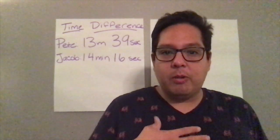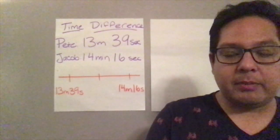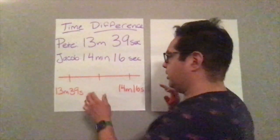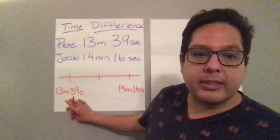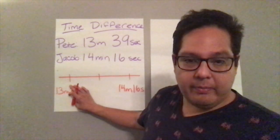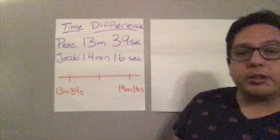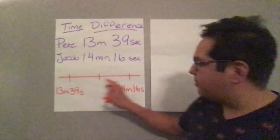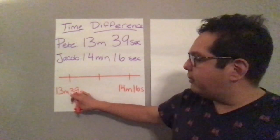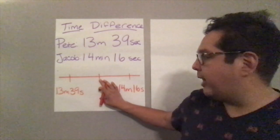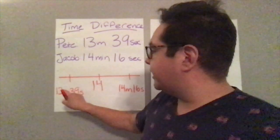The way I taught you was to use a number line. As you can see behind me, I have set up my number line. I started on the left with the smallest time, which was 13 minutes and 39 seconds — Pete's time — and then the finishing time of 14 minutes and 16 seconds on the right. To solve, I need to find the difference between these two times, and I know that time runs on 60-second loops. So I figure out how many seconds to get to the next minute, which is 14 minutes.